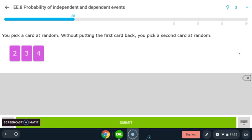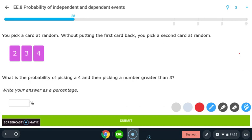So let's take a look at this. So we pick a card at random without putting the first card back, you pick a second card at random. So remember, if we're not putting it back, our first answer is, or our second answer is going to depend on the first one. So this is a dependent event. So we'll look at the first one. What's the probability of picking a four? And then picking a number greater than three. So here, we're going to pick a four. The four is one out of three total cards. So our first probability is one out of three.